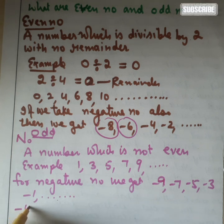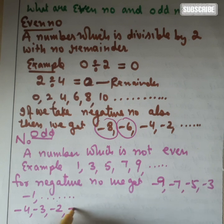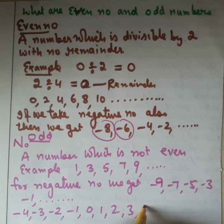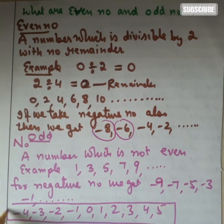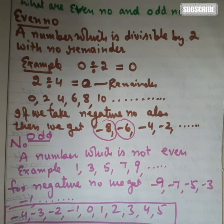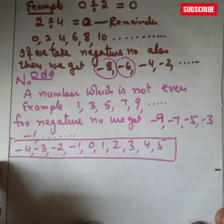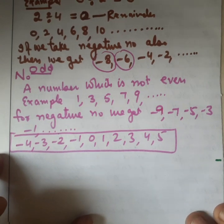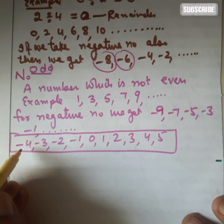So you can take many numbers: minus 4, minus 3, minus 2, minus 1, 0, 1, 2, 3, 4, 5. Now we have considered all these numbers. You will guess which of these numbers are odd or even. Now you are going to tell me — do it and give me the answer in the comment section. Hurry up!